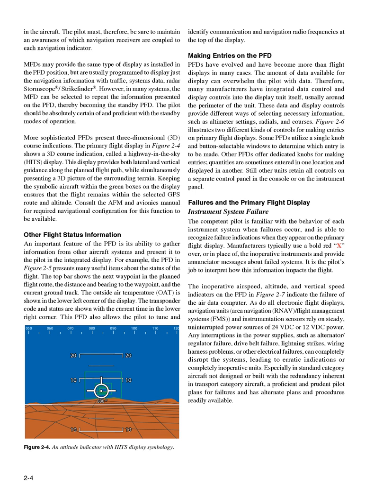Consult the AFM and avionics manual for required navigational configuration for this function to be available. Other flight status information. An important feature of the PFD is its ability to gather information from other aircraft systems and present it to the pilot in the integrated display. For example, the PFD in Figure 2-5 presents many useful items about the status of the flight. The top bar shows the next waypoint in the planned flight route, the distance and bearing to the waypoint, and the current ground track. The outside air temperature, OAT, is shown in the lower left corner of the display. The transponder code and status are shown with the current time in the lower right corner.